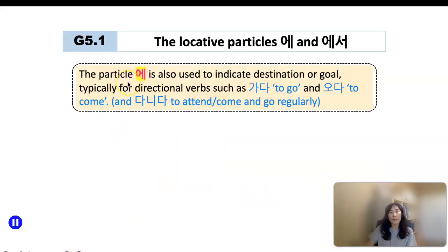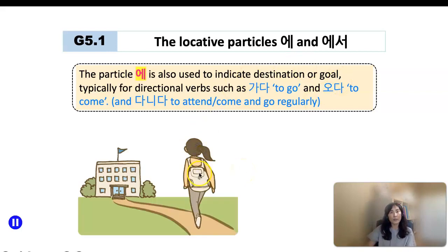에 can be associated with many different functions. 에 is also used with directional verbs such as 가다 to go, 오다 to come, and also 다니다 to attend or come and go regularly. So like directional verbs, it indicates destination or goal. Here's an example. I want to say, okay, her name is Sandy. Sandy goes to school. 학교에 가요. So as you can see here, 에 is attached to a destination where she's going. 학교 is the destination.